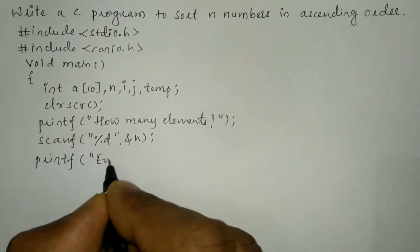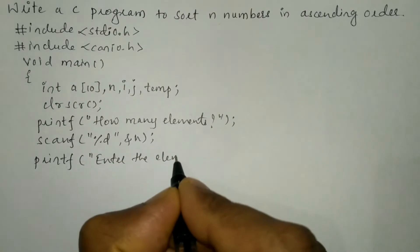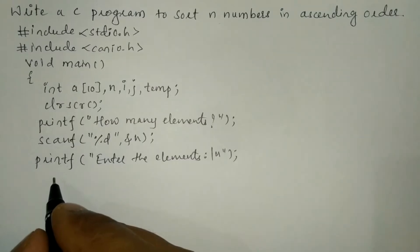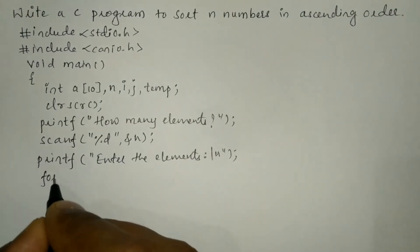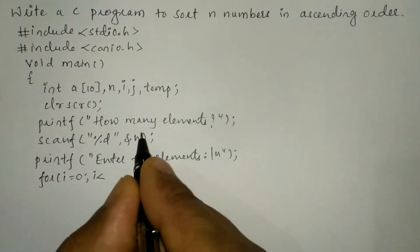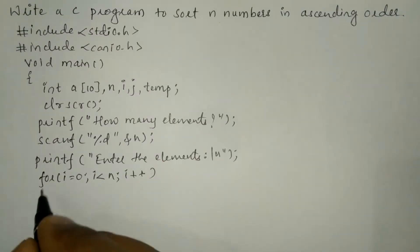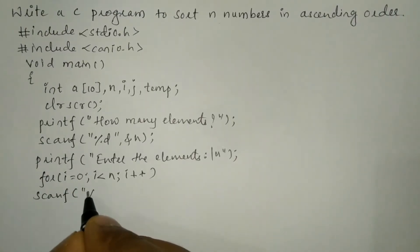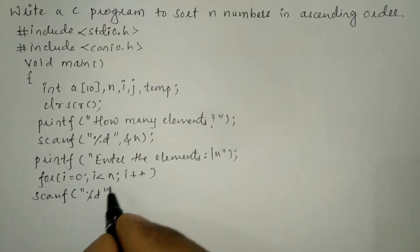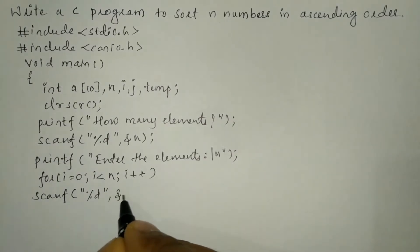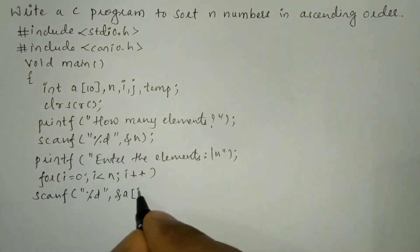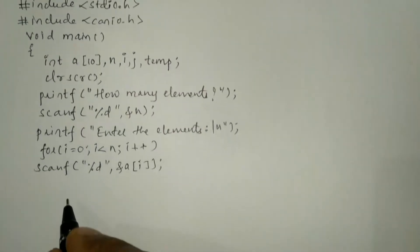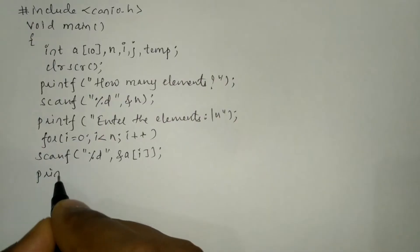We'll ask the user to enter the elements using a printf function — writing 'enter the elements'. The elements are entered one by one using a for loop: for i equals zero, i less than n, i plus plus. We receive each element using scanf with %d and store it in &a[i].